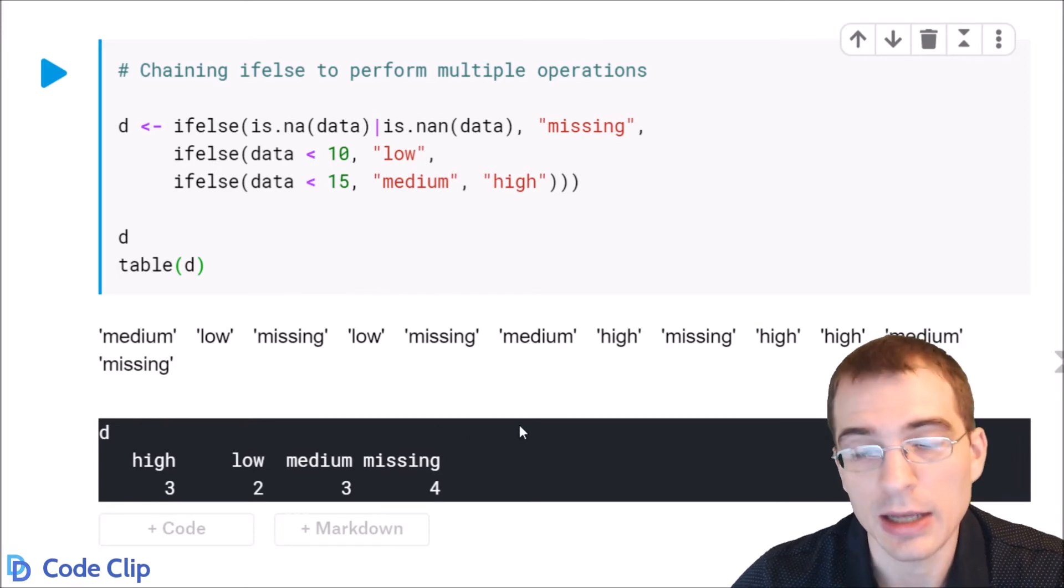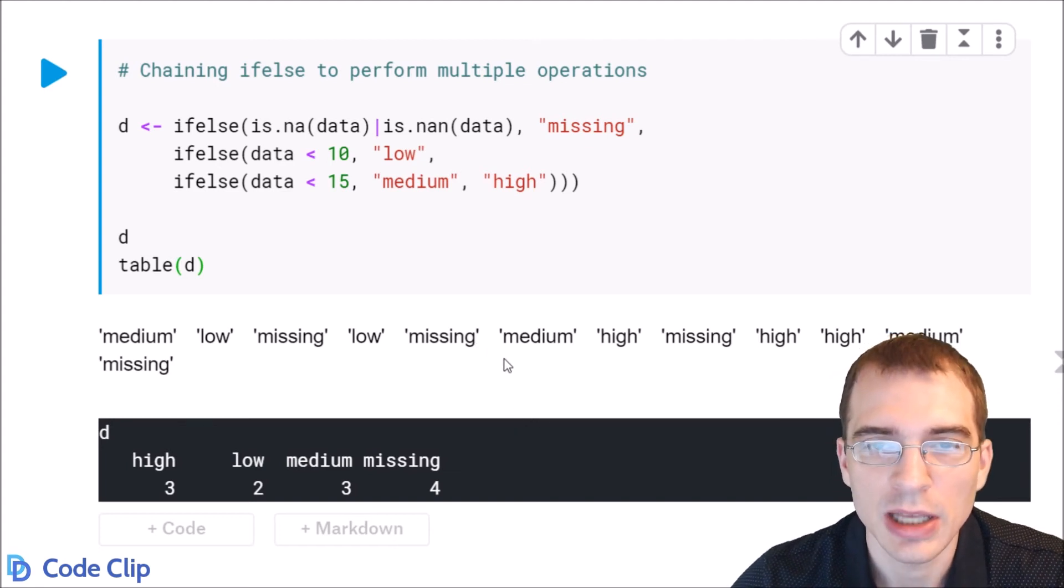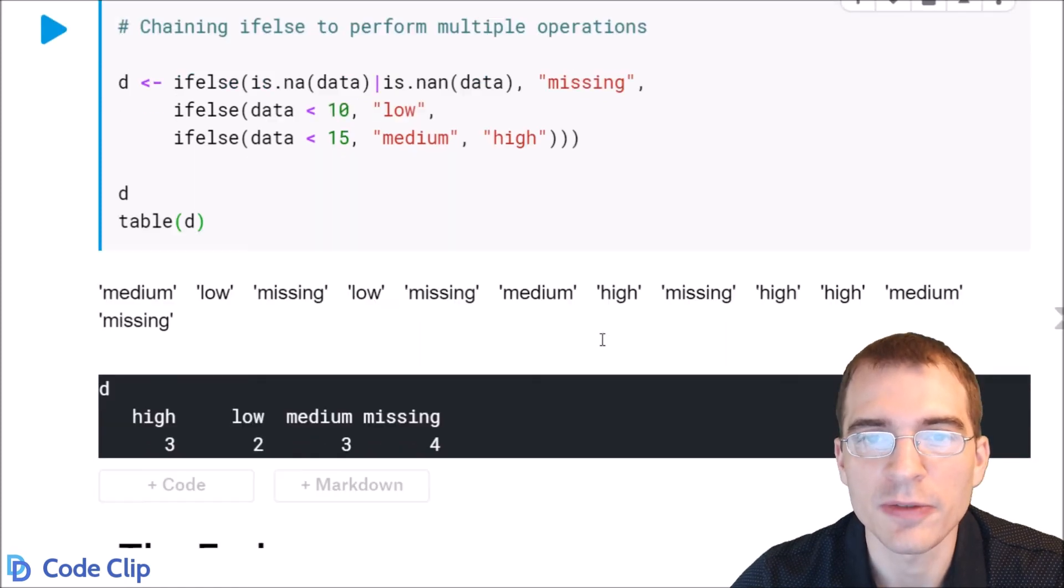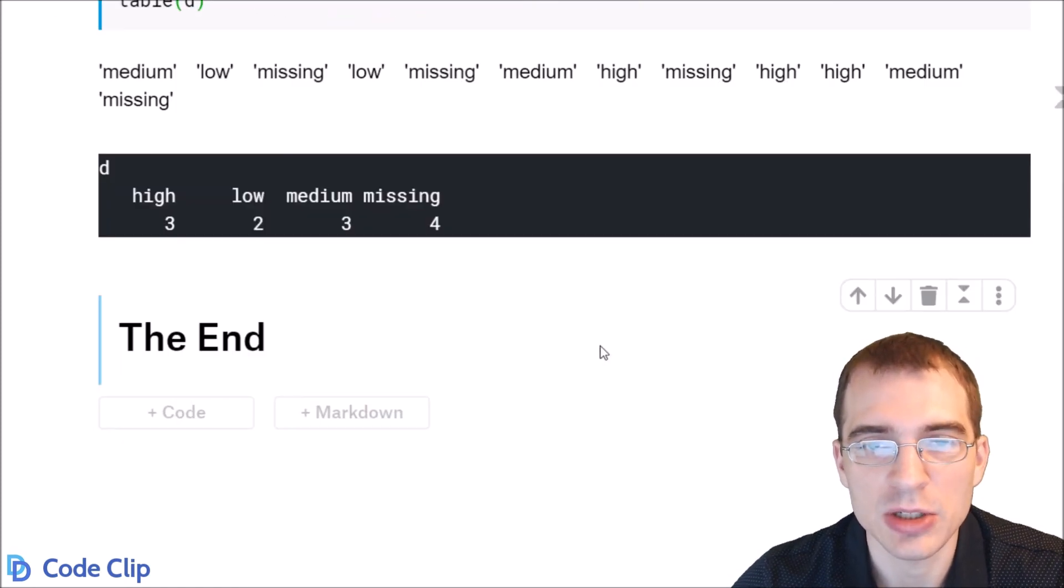Anytime you want to take a vector and do something with some of the values and something else with other values, ifelse should be one of the first functions that come to mind. It is much more efficient to use ifelse on a vector than it is to loop through with an explicit for loop and perform an operation on every single value sequentially.